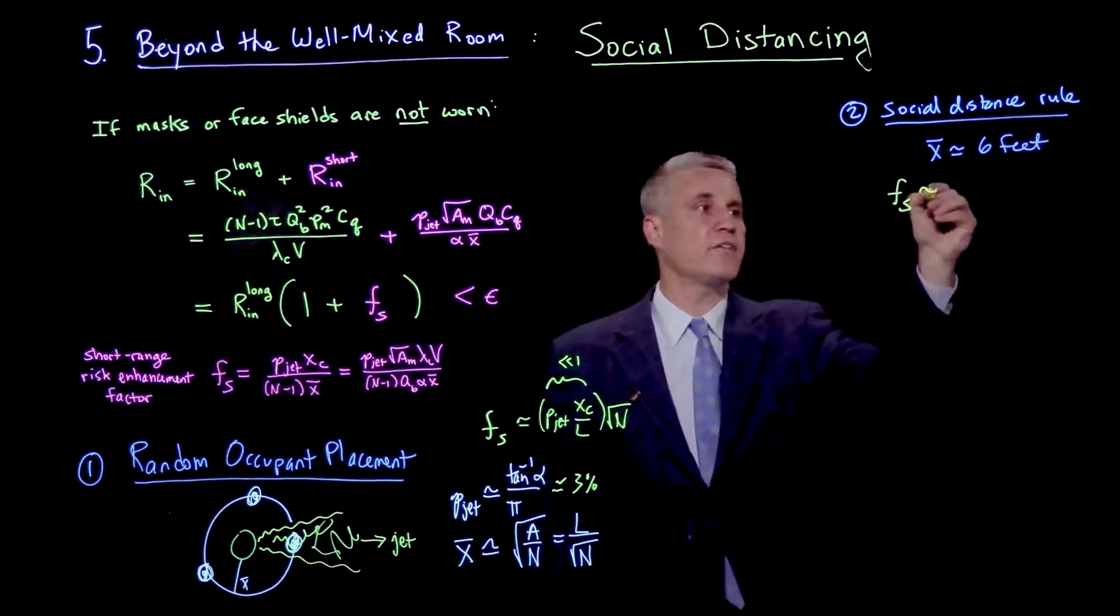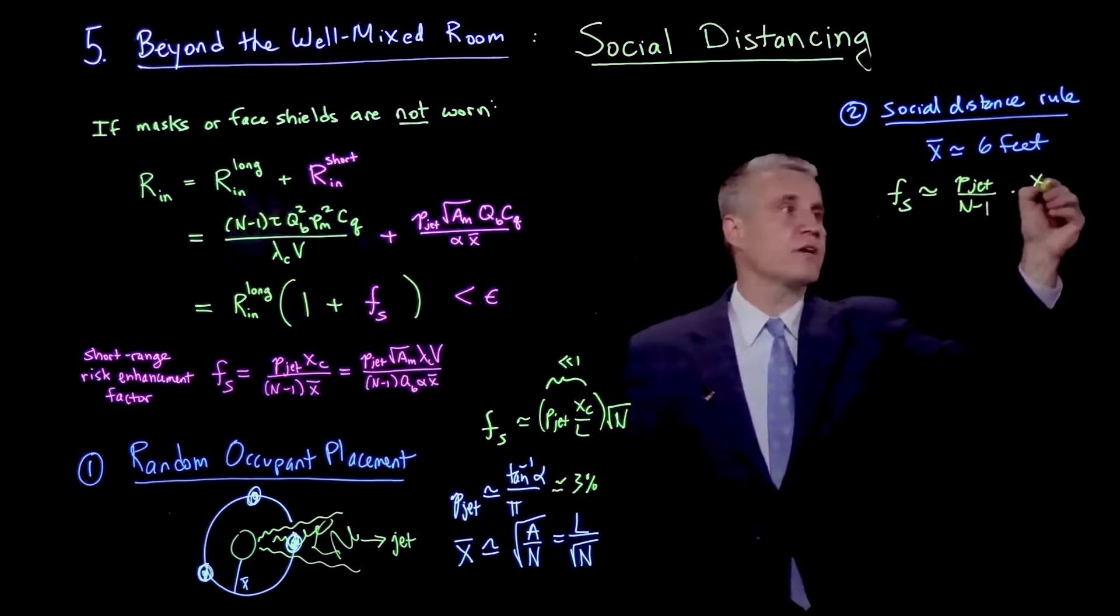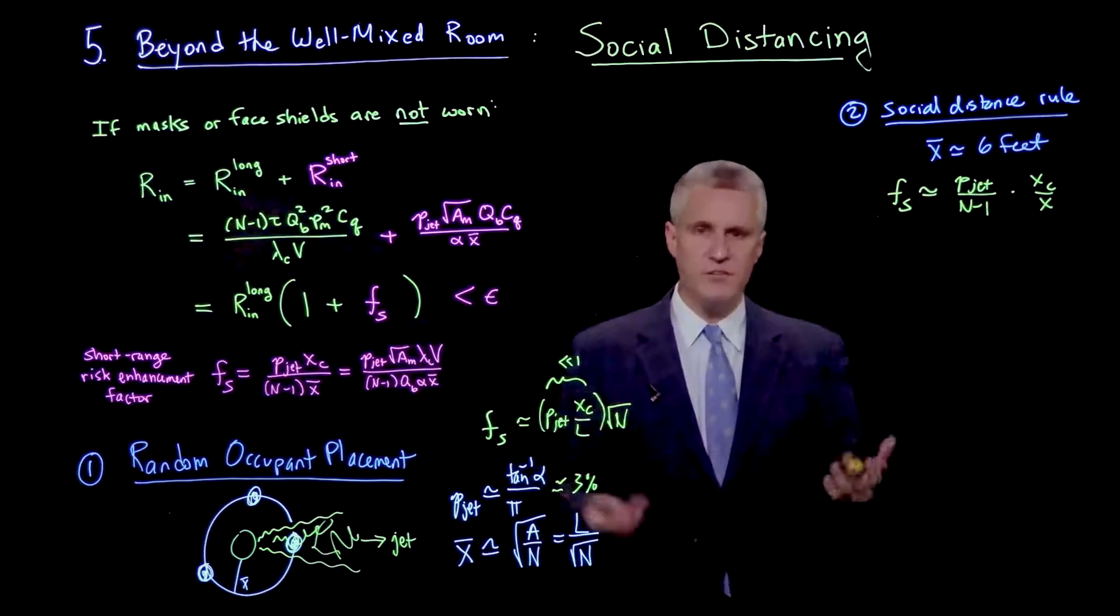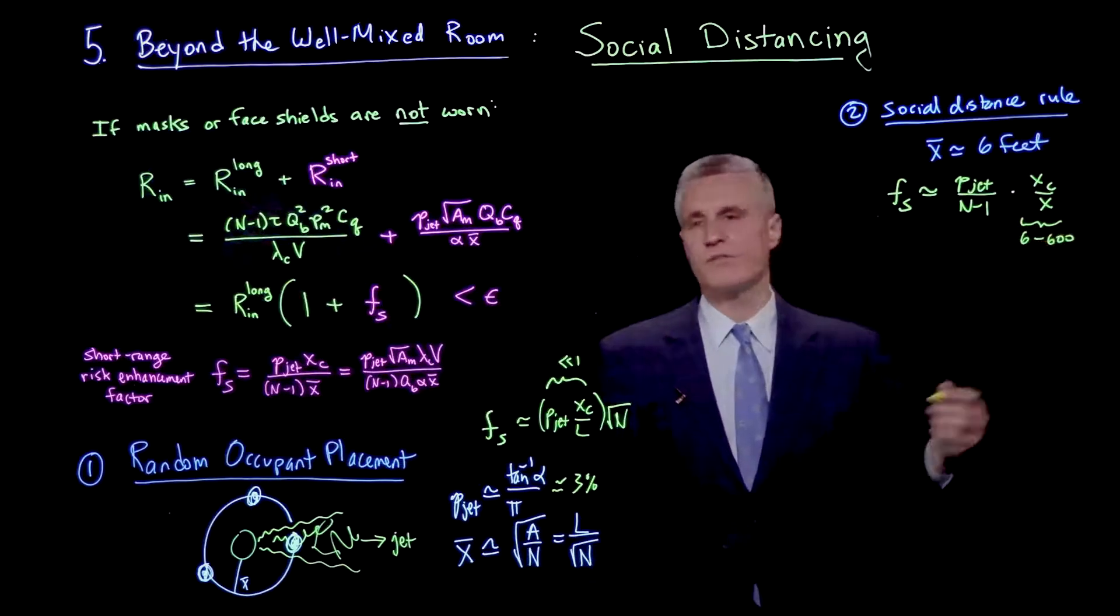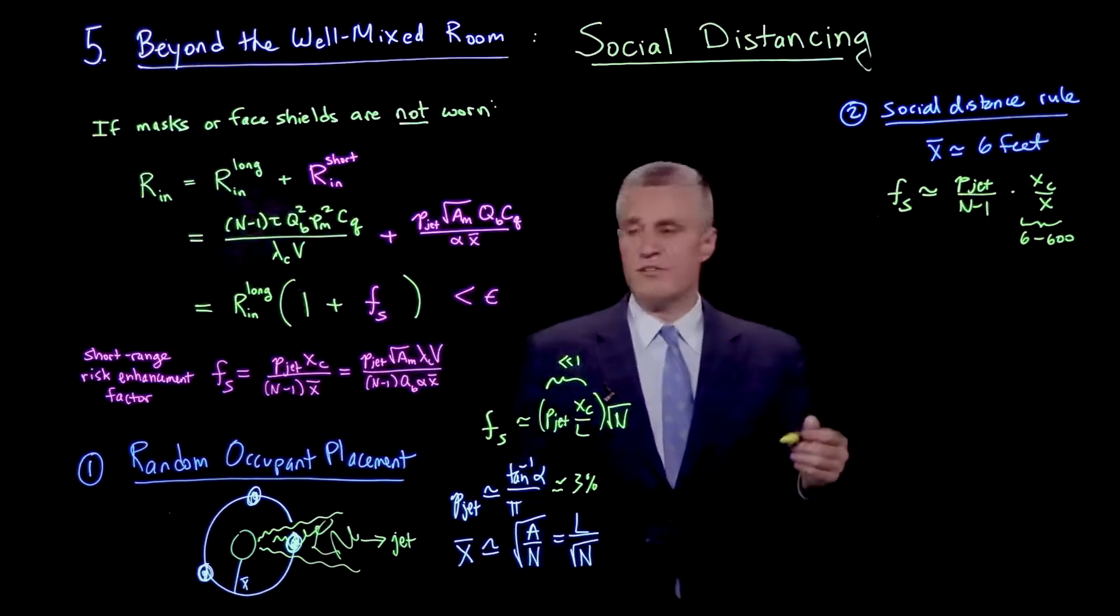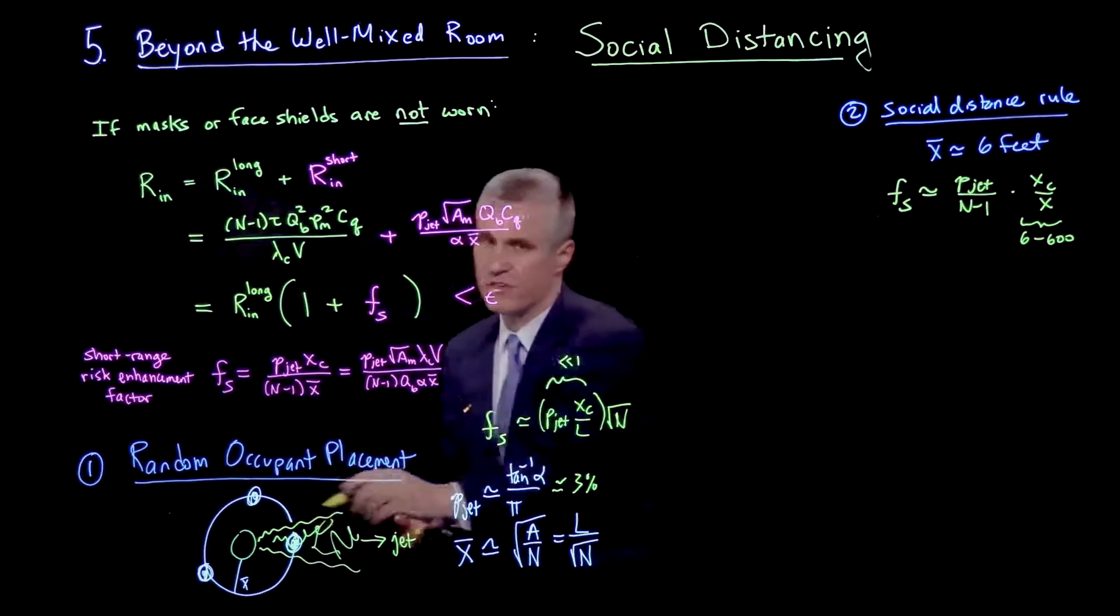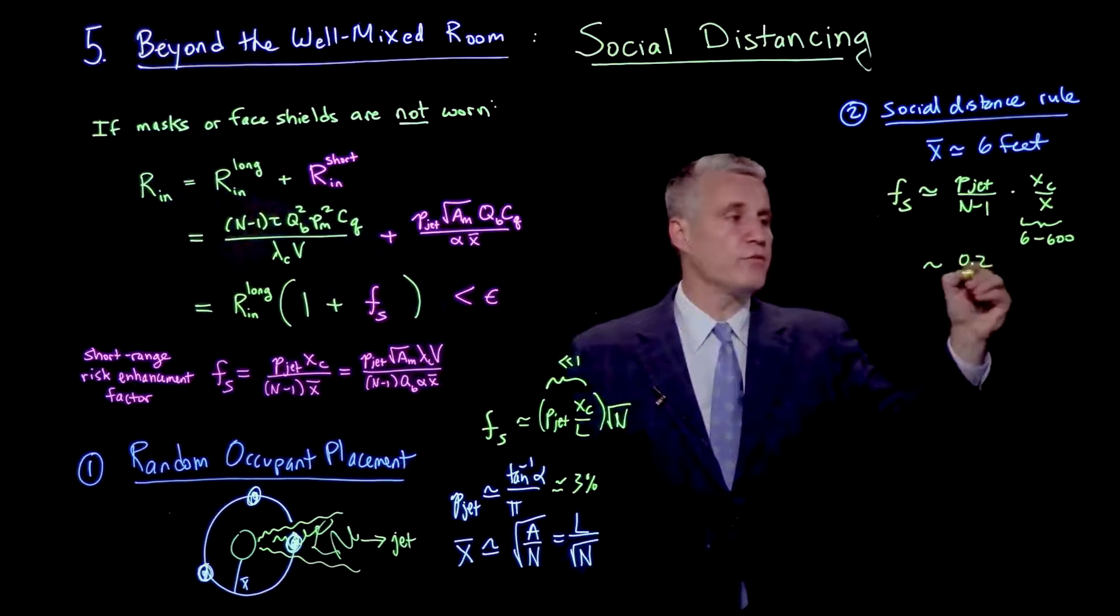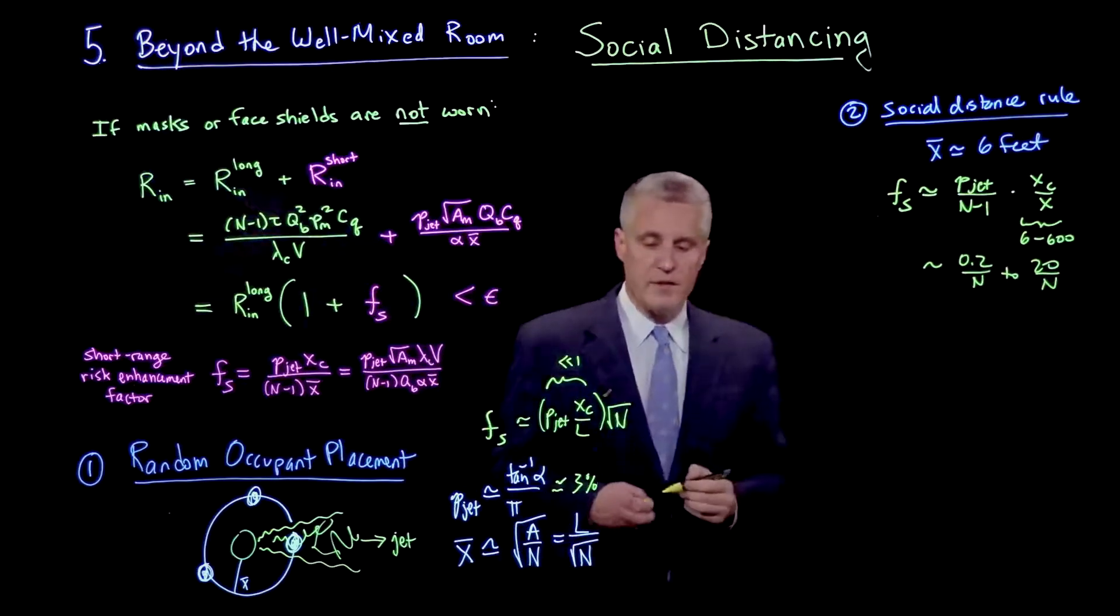In that case, the fs is p_jet over n minus 1 times xc over x. We've already estimated that at six feet, xc over x depends on the ventilation and the size of the room and other factors, but we've already said that this factor here might be something like 6 to 600 for a certain set of examples that we've just considered. So when we put all this together, if we take into account also that p_jet is around 3%, if we imagine having random placement of people but at a fixed minimum distance of six feet, then what we'll find is this ends up being something like 0.2 over n, ranging up to 20 over n.